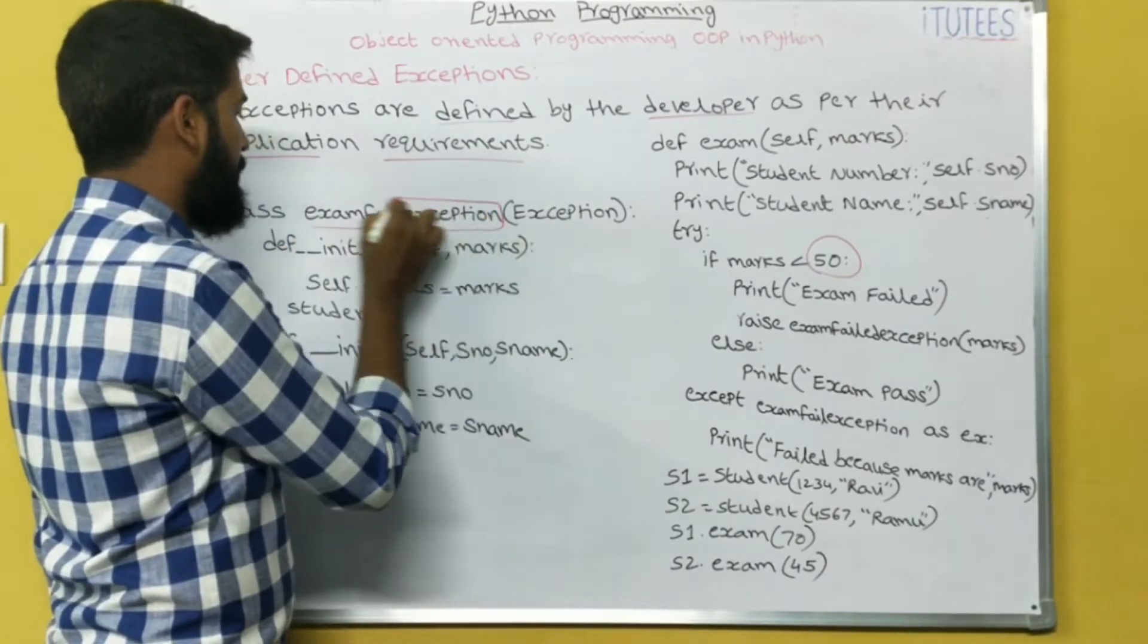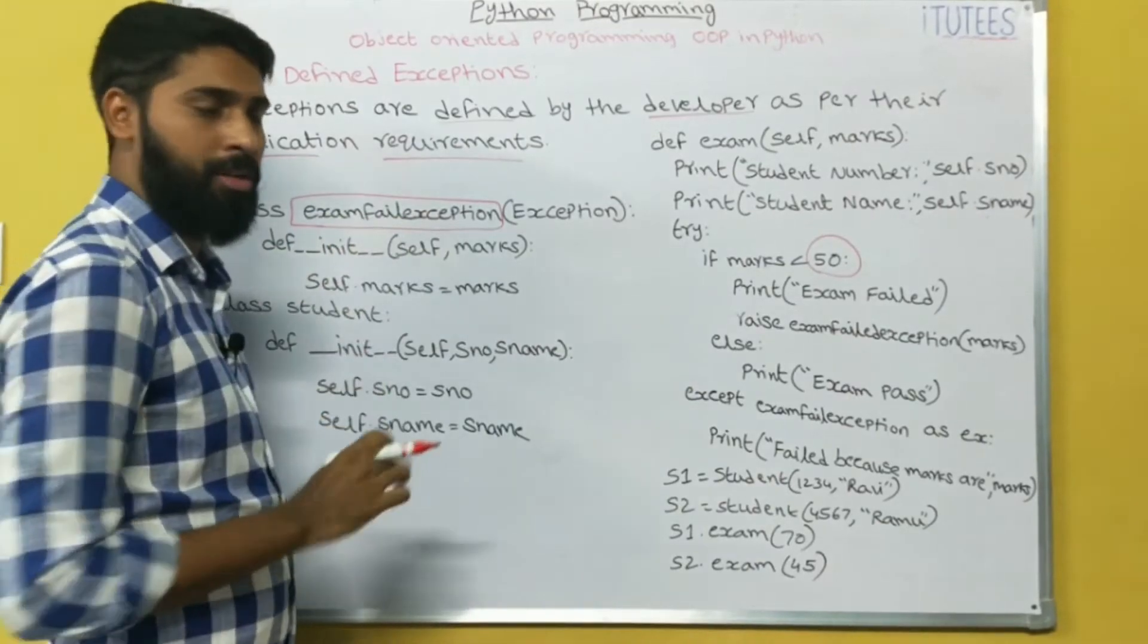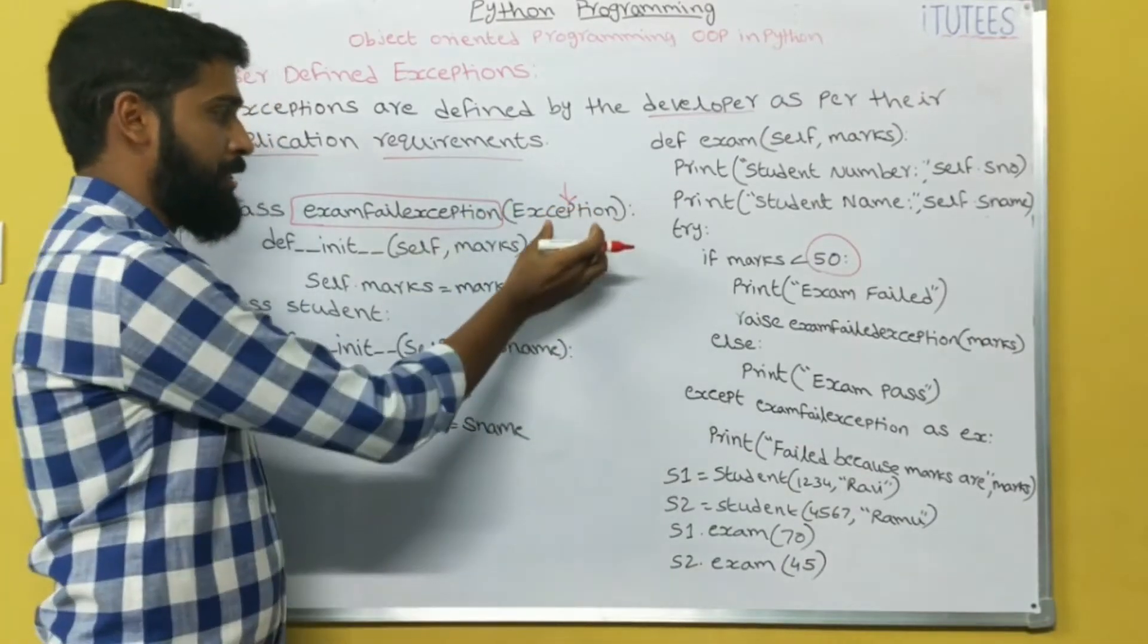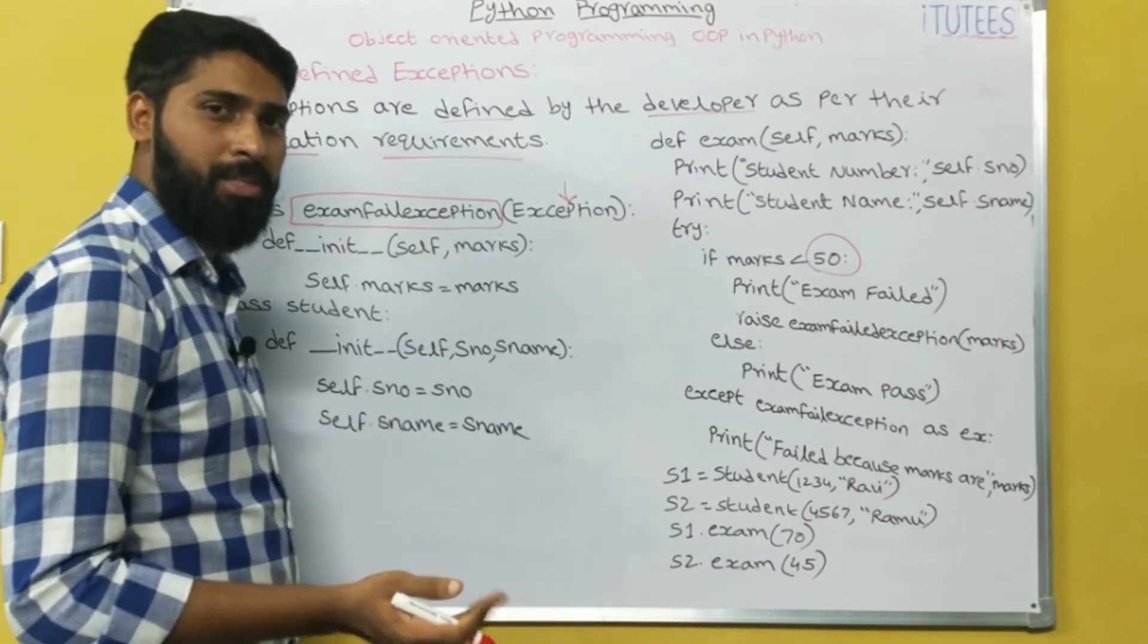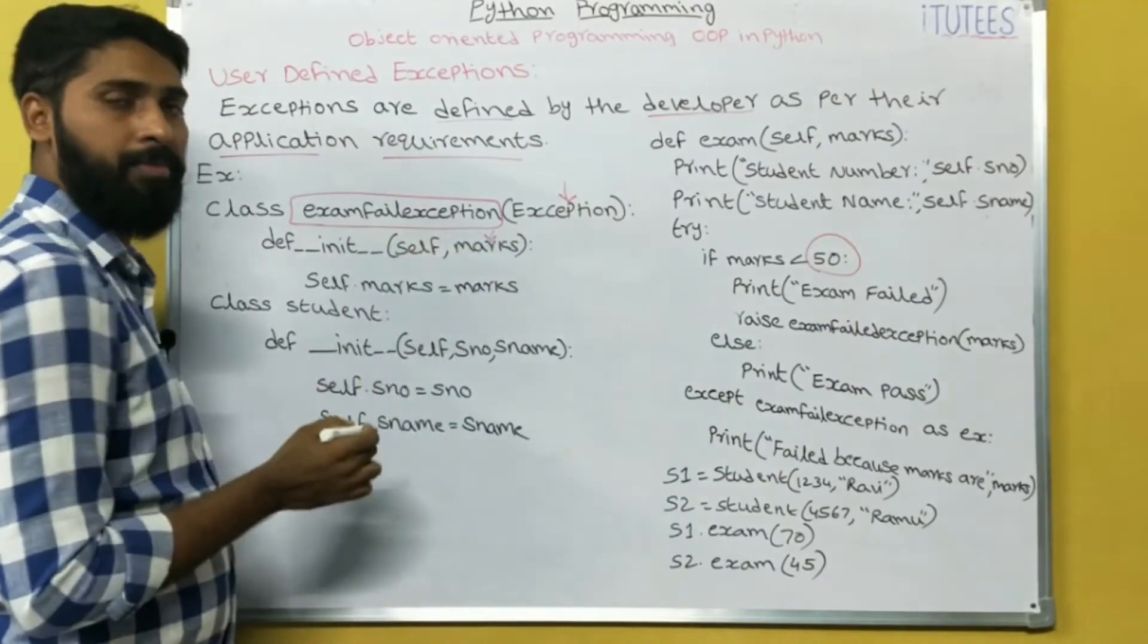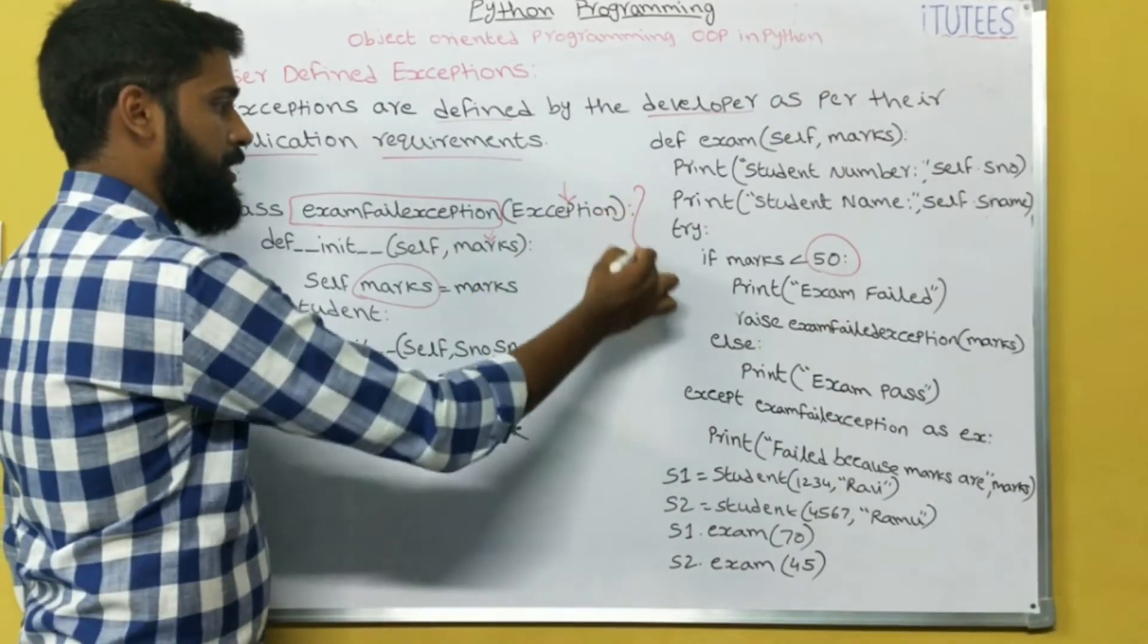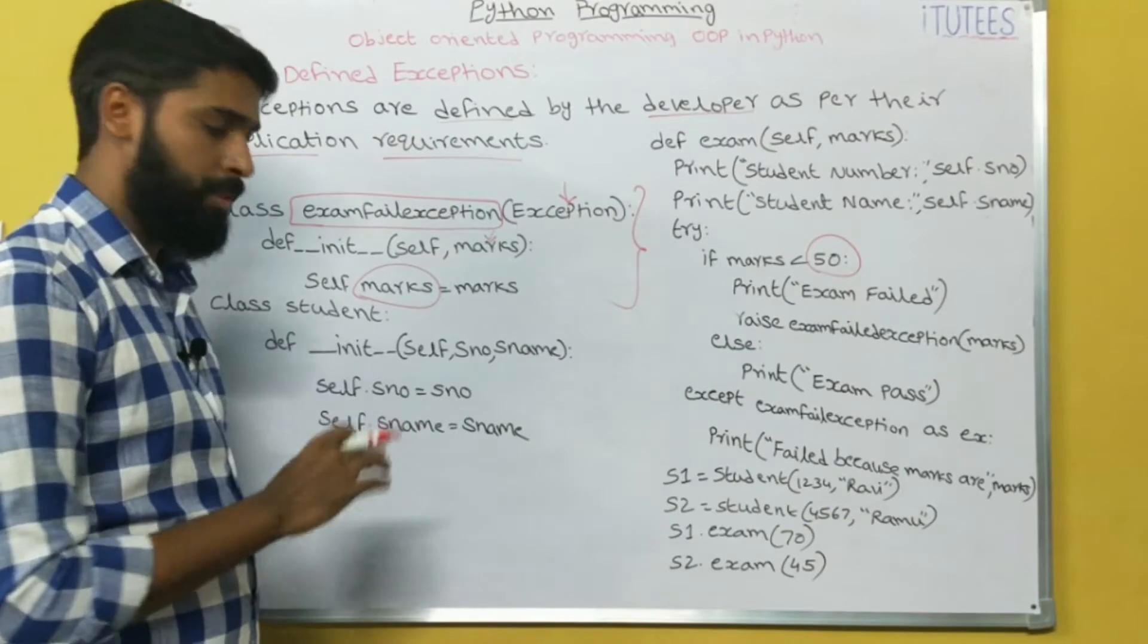Here I am giving the exception name as exam failed exception. This is the exception name. You can use any name here. But the parent class is exception. Exception is a class which is parent to all the exceptions in python. This class accepts one argument, marks, and creates one instance variable self.marks equals to marks. This is the definition of user defined exception. Now we can write the program normally.